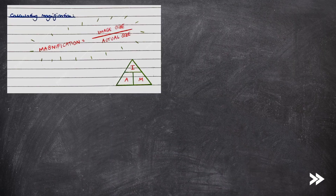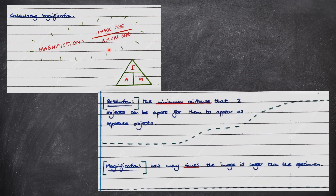We need to learn a formula and two definitions. Magnification equals image size over actual size. Resolution is the minimum distance that two objects can be apart for them to appear as separate objects. And magnification is how many times the image is larger than the specimen.